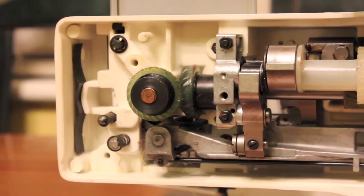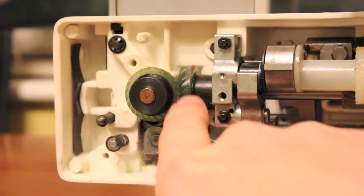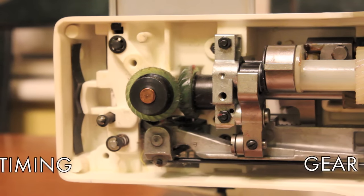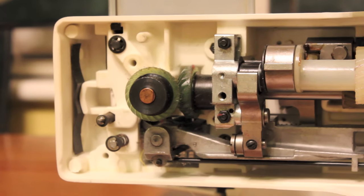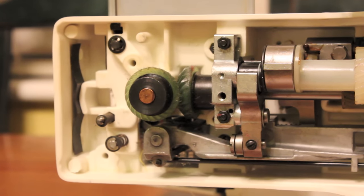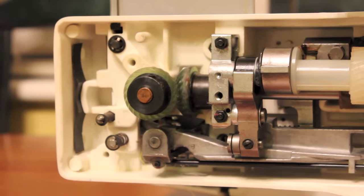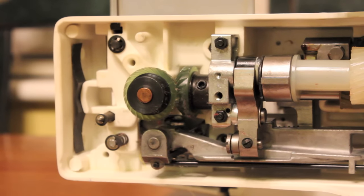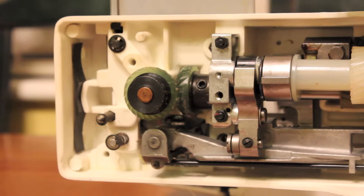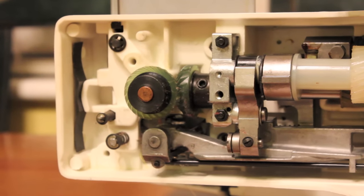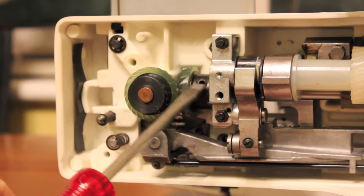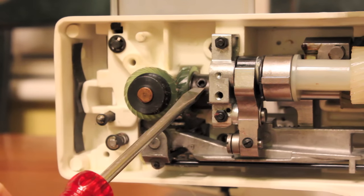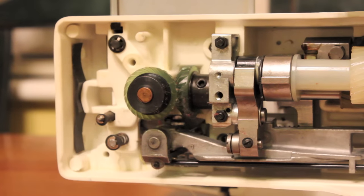This black bearing here - we're going to be working with that. As we turn the hand wheel back here, you'll see this turning and then it exposes this little bushing or set screw. That is what we're going to be loosening to adjust the hook, the hook wheel.